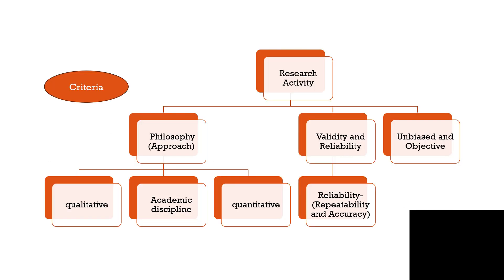Research activity के तीन main parts हैं। पहला है philosophy — यानि कि research में approach कैसी होनी चाहिए: qualitative यानि interview-based, quantitative यानि जिसे आप measure कर सकते हैं, या academic discipline के अनुसार research plan करना।